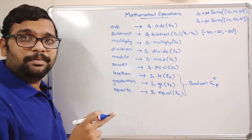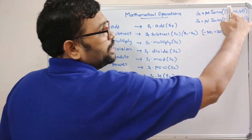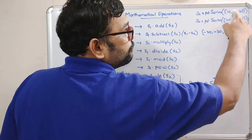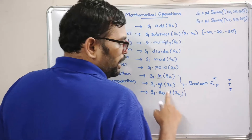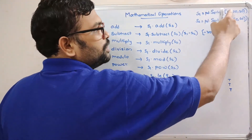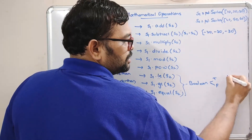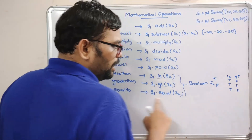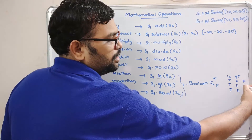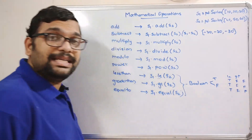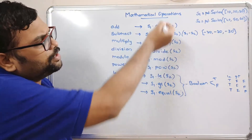The boolean result is returned for individual elements. For less than: 10 less than 40 is true, 20 less than 50 is true, 30 less than 60 is true. For greater than s1.gt(s2): 10 greater than 40 is false, and so on. For equal to, since no elements are equal, all results will be false.